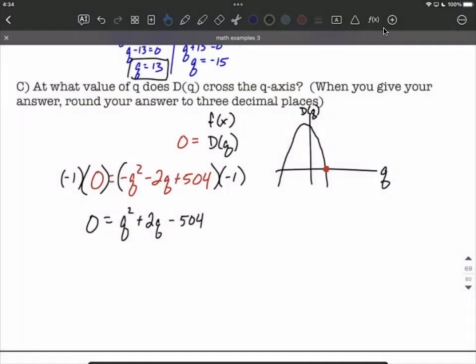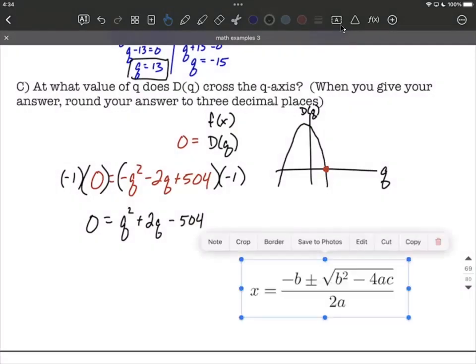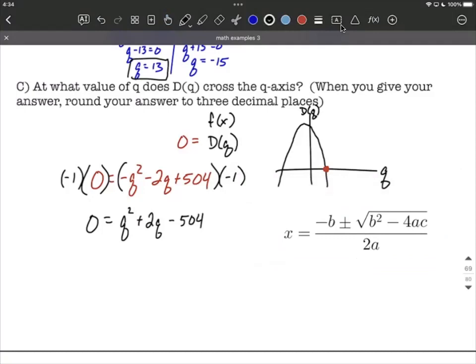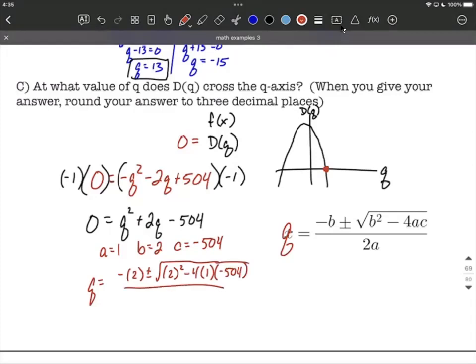So to plug in, I'm going to use a equals 1, b equals 2, and c equals negative 504. Of course, on the left-hand side, it's not x, it's q is our variable. But q is going to be given by negative 2 plus or minus the square root of 2 squared minus 4 times a, which was 1, times c, negative 504, all over 2 times a, which is 1. Now, we'll get to the exact same solution if you didn't choose to get rid of the negative leading coefficient.